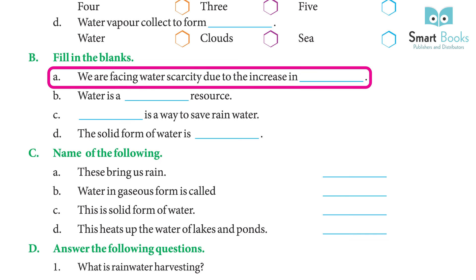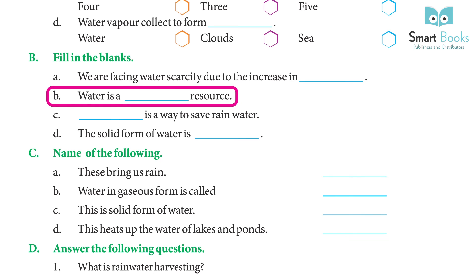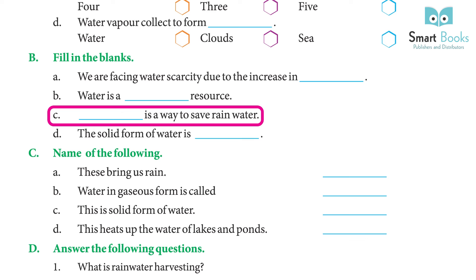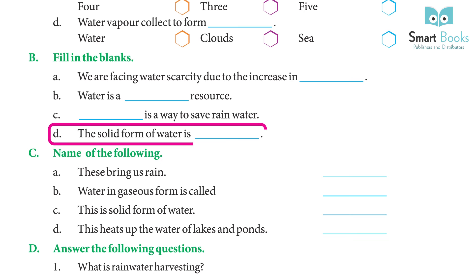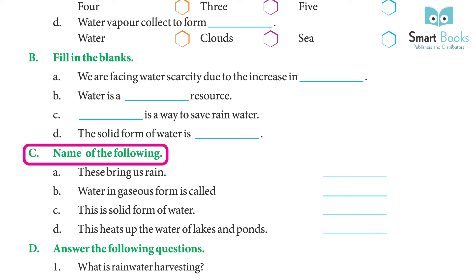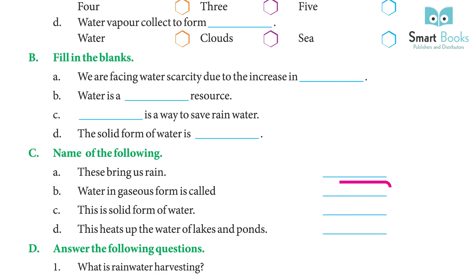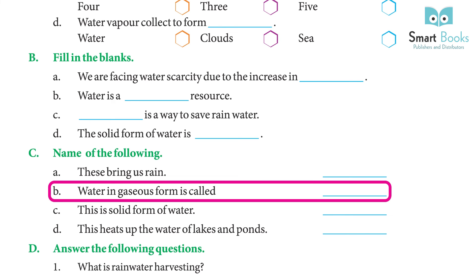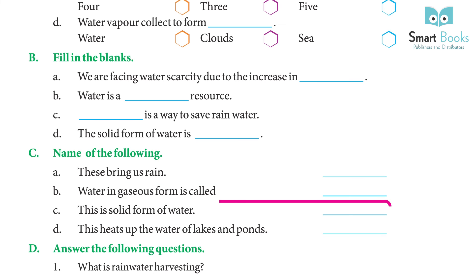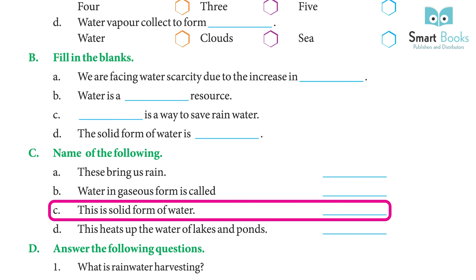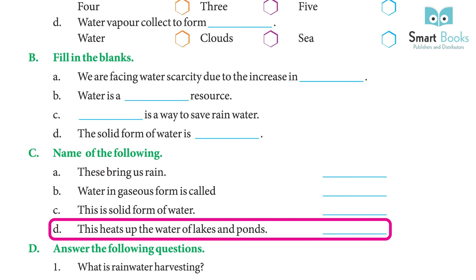Fill in the blanks: (a) We are facing water scarcity due to the increase in population. (b) Water is a natural resource. (c) Rainwater harvesting is a way to save rainwater. (d) The solid form of water is ice. Name the following: (a) These bring us rain — clouds. (b) Water in gaseous form is called water vapor. (c) The solid form of water is ice. (d) This heats up the water of lakes and ponds — the Sun.